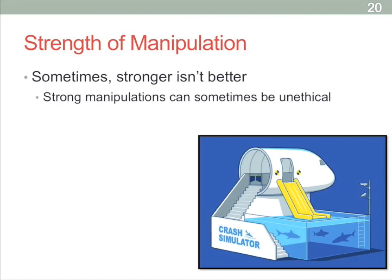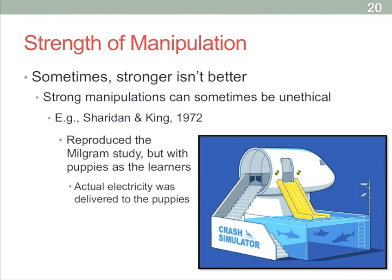The last way in which stronger manipulations might not be best is that sometimes they can be unethical. Sometimes you can go too far in exposing participants to real-world dangers to see how they'll react. This is why we have ethics boards in place now. An example that came along likely before ethics boards were established: some researchers wanted to recreate the Milgram study — where people were asked to shock human participants to the point of death — but instead asked: would they shock puppies to the point of death? Their reasoning was that Milgram participants probably knew researchers wouldn't actually kill someone, so they'd be willing to go up to 450 volts.